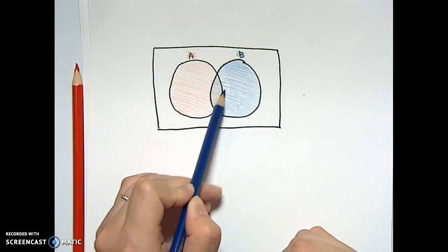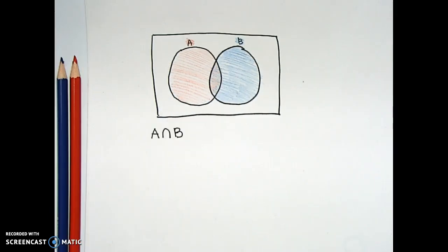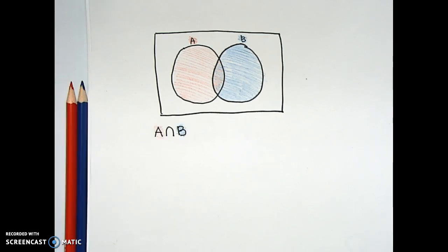Alright, we're shaded in, so let's now talk about some set operations. And Heidi has chosen A intersect B. Heidi, what does intersection mean to you in this Venn Diagram? The intersection means the common area that A and B shares. Cool, so what color is the common area in this one?